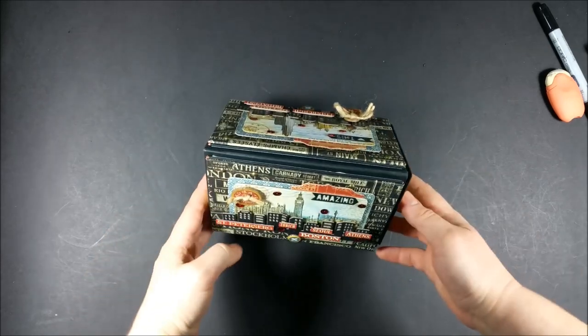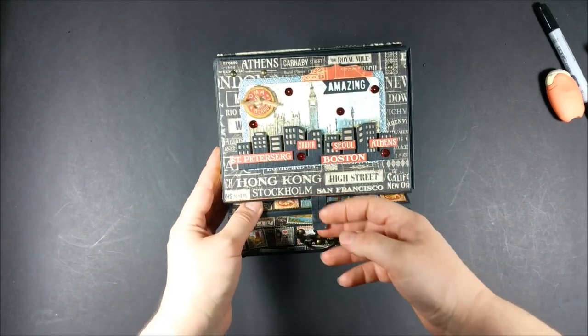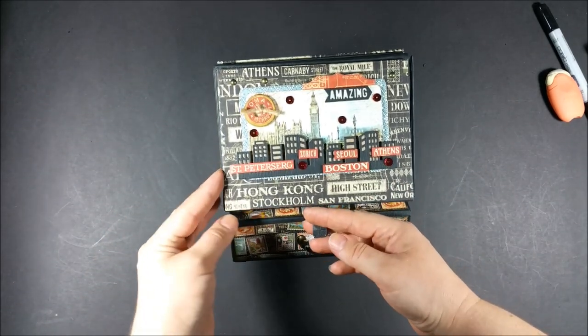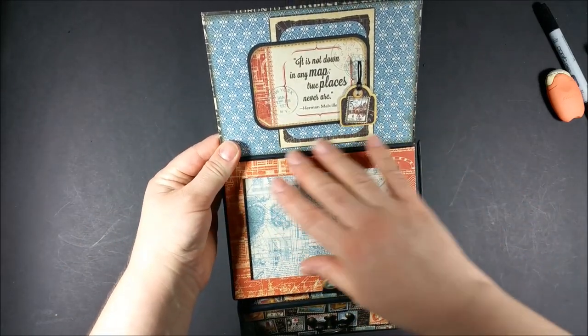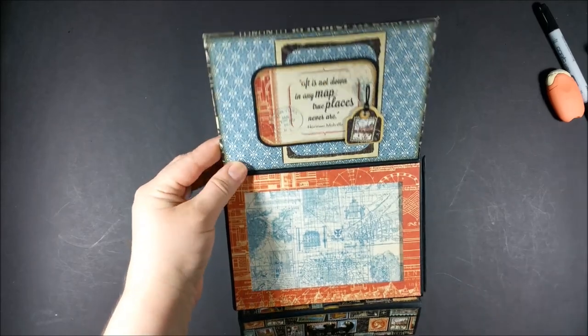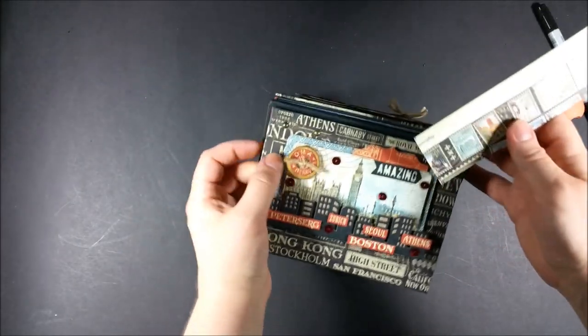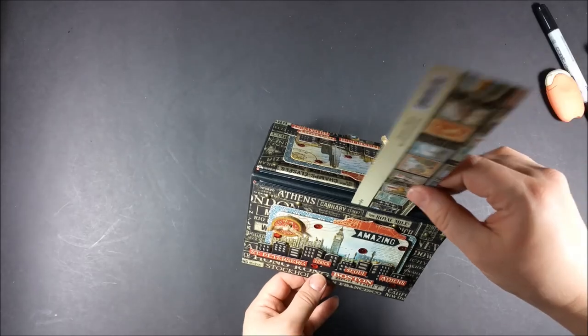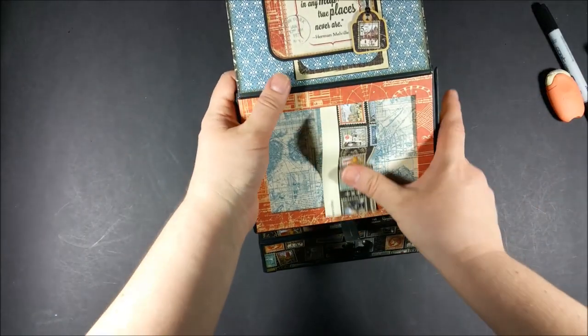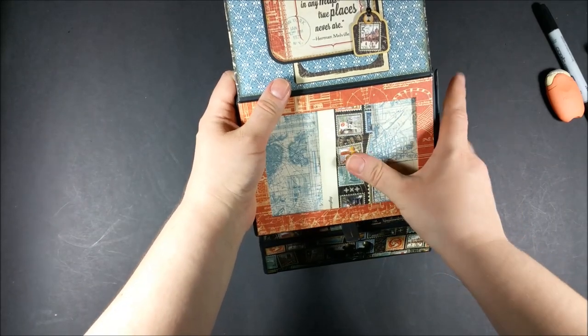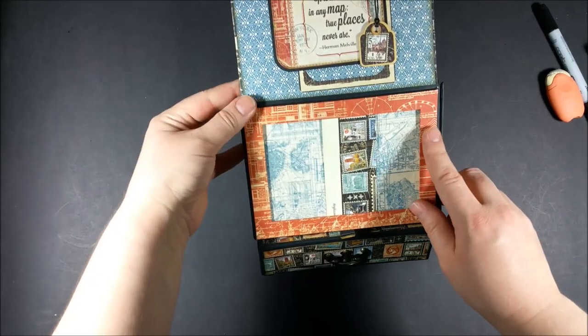On the sides we have magnetic closures for the lids which flip open and reveal the frame for the picture. The picture is sliding from the top like this and the size of the picture should be three and a half by five inches.